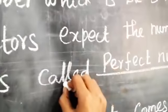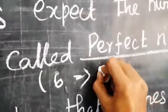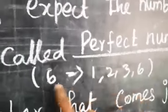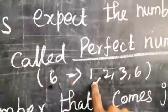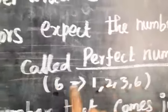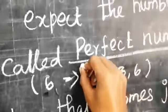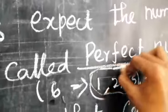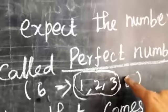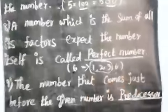Look at the perfect number example. Take the number 6. The factors of 6 are 1, 2, 3, and 6. We can divide 6 by 1, 2, 3, and 6. Now add the factors excluding 6 itself: 1 + 2 + 3 = 6. So 6 is a perfect number.